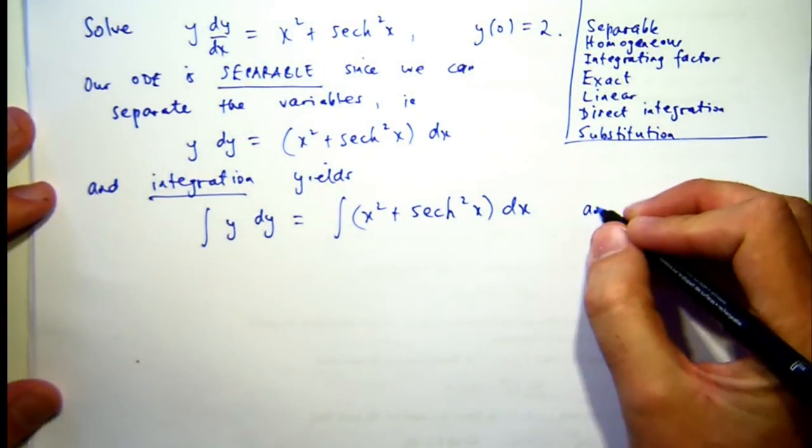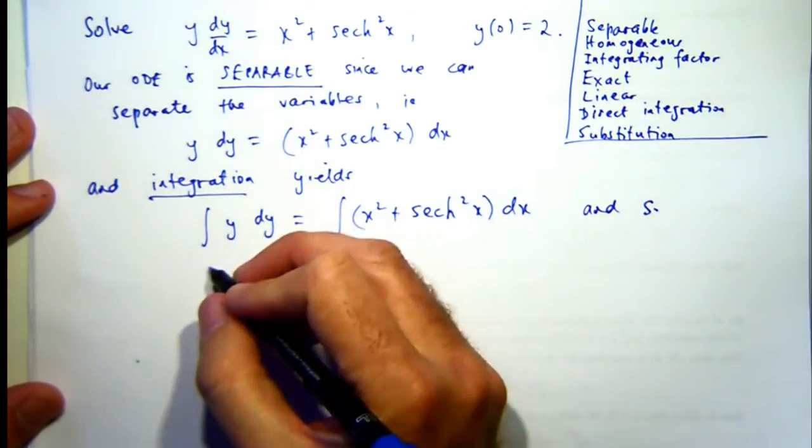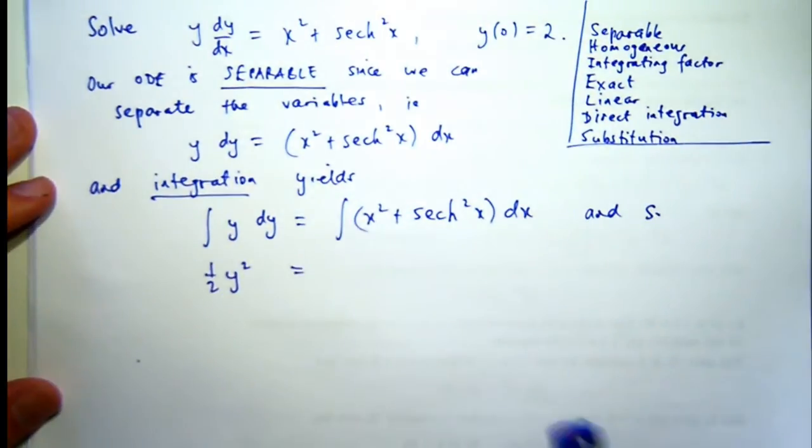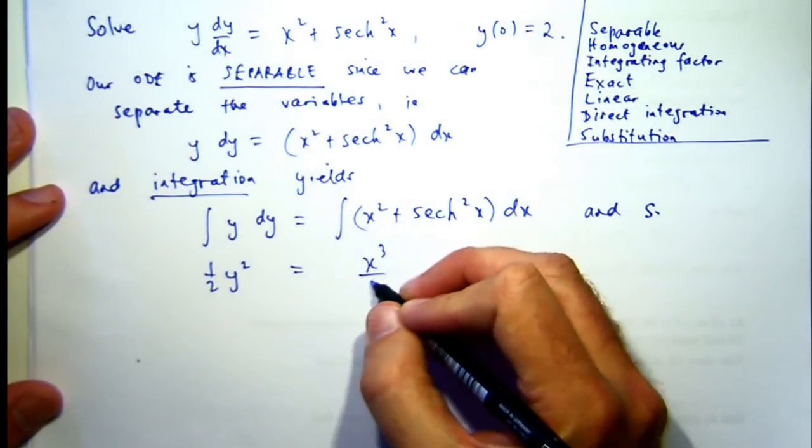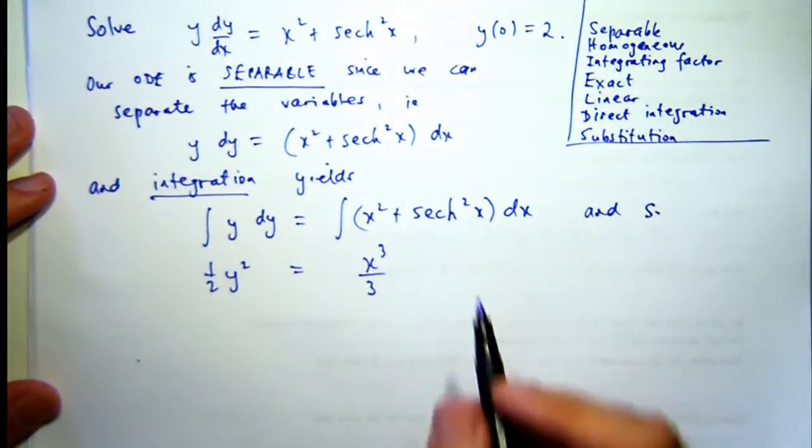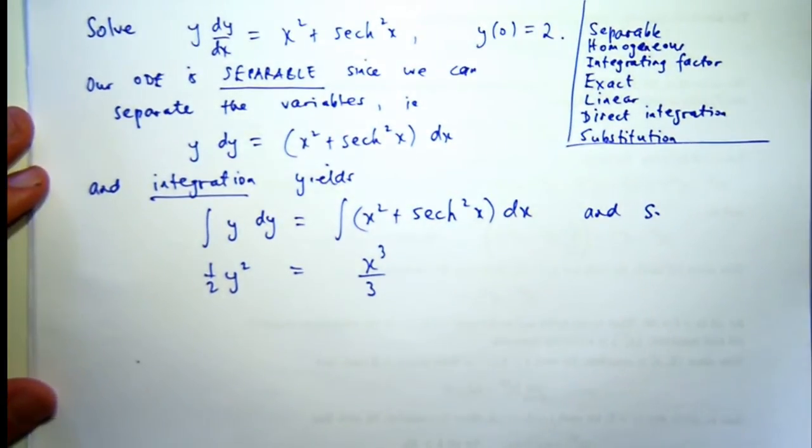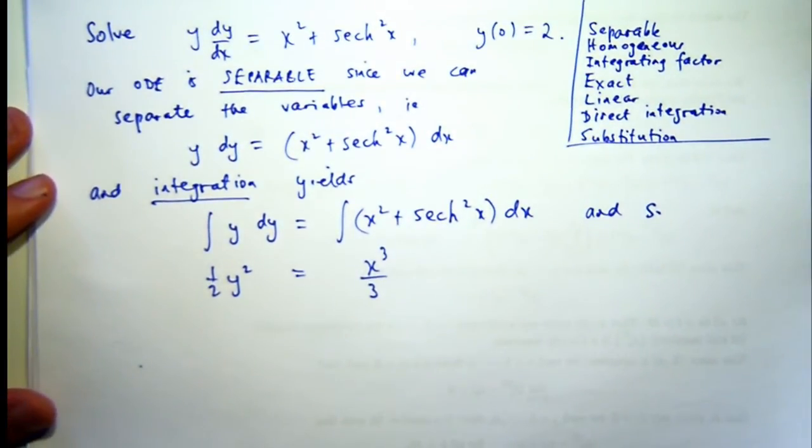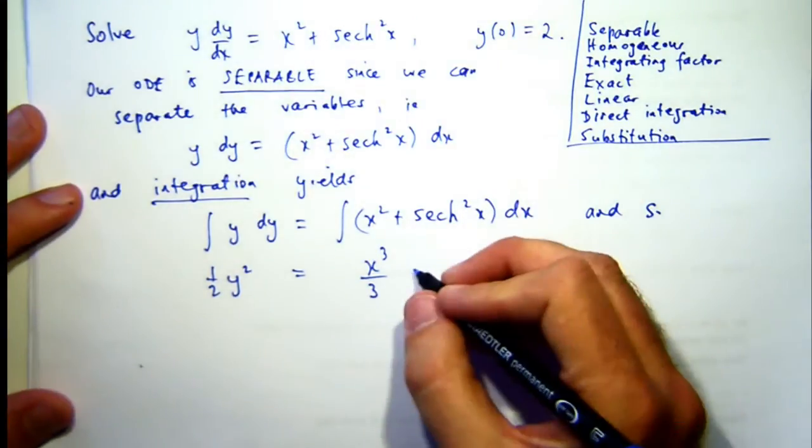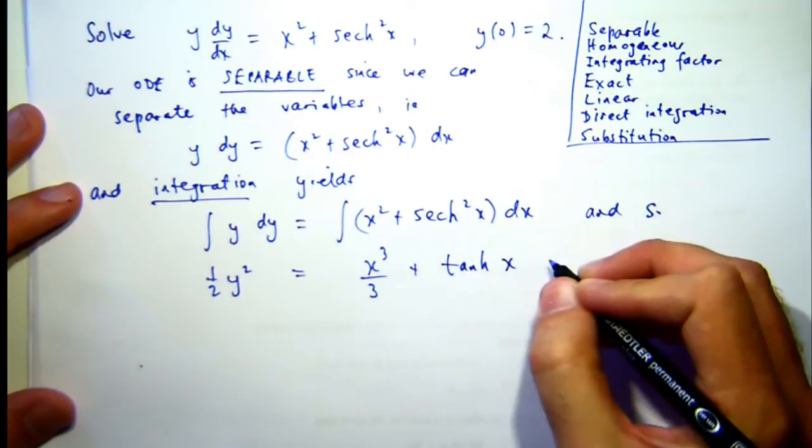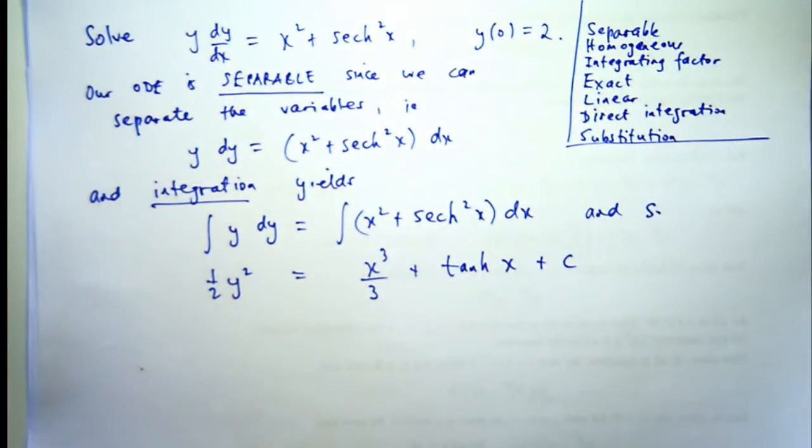So on the left-hand side, I'm going to get something like a half y squared. On the right-hand side, I'm going to get something like this. Now, the integral of hyperbolic sech squared, anyone know it? Hyperbolic tan. So think of the relationship between the derivative of tan and sec squared. The derivative of tan is sec squared, and it's sort of an analogue with the hyperbolic functions as well.